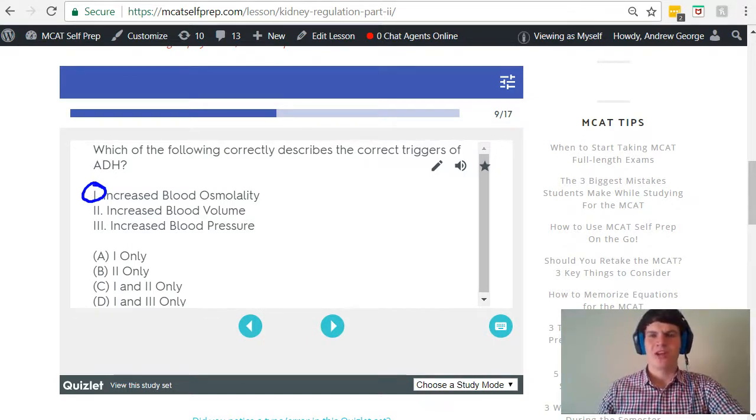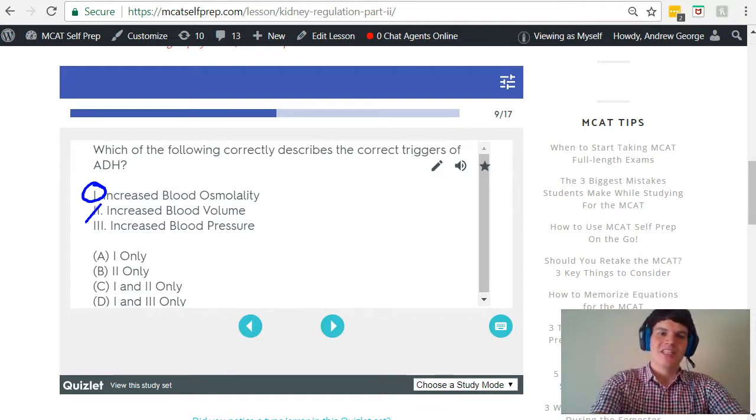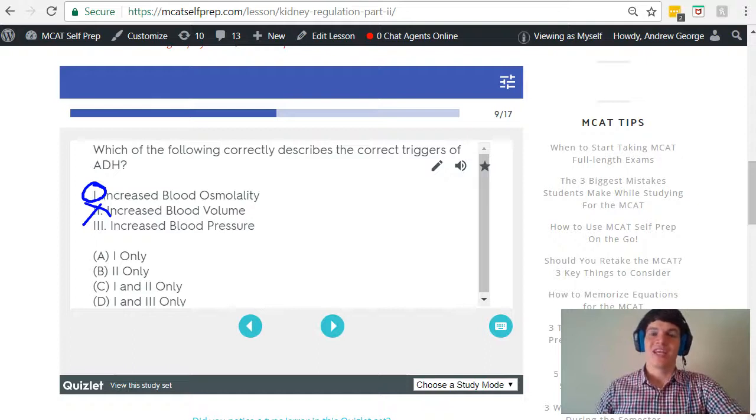What about blood volume? The way I would think about it is that ADH is causing an increase in blood volume. And so if we already have enough blood volume, why would we want to increase it even more? It would be a decreased blood volume that could result in ADH production.